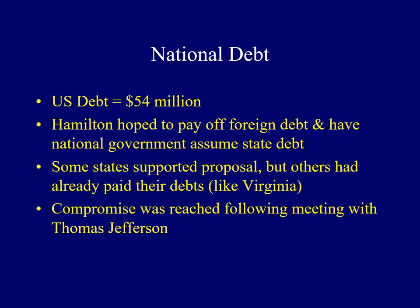During the Revolutionary War, the United States had acquired a debt of about $54 million. Hamilton proposed the United States pay off the foreign debt, and that the national government would then assume the debt acquired by the states, making them beholden to the national government. Several states with large debts, like Massachusetts, supported his proposals. But many others, several from the South like Virginia and Maryland, had already paid off their debt. His financial plans seemed doomed to failure in Congress, until a compromise solution was reached following a meeting with Thomas Jefferson.